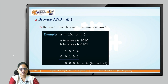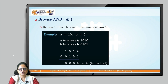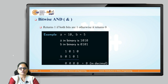First is the bitwise AND operator. It returns 1 if both the bits are 1, otherwise it returns 0. In this example, we have taken two values: A as 10 and B as 5. We will represent both numbers in binary. Binary of 10 is 1010 and binary of 5 is 0101. So when we perform the bitwise AND operation, it returns 1 if both bits are 1.